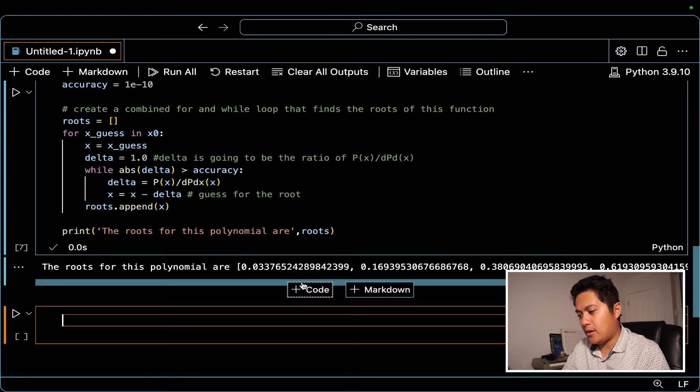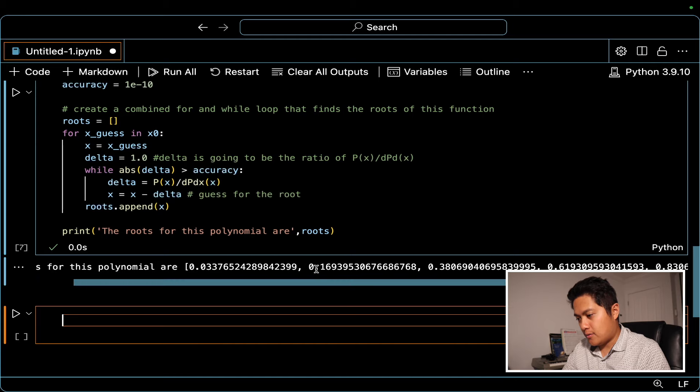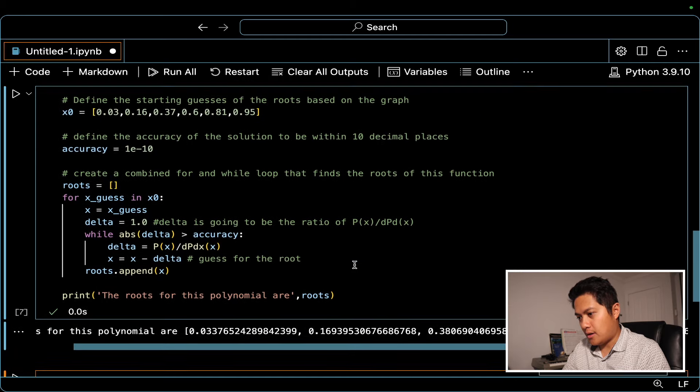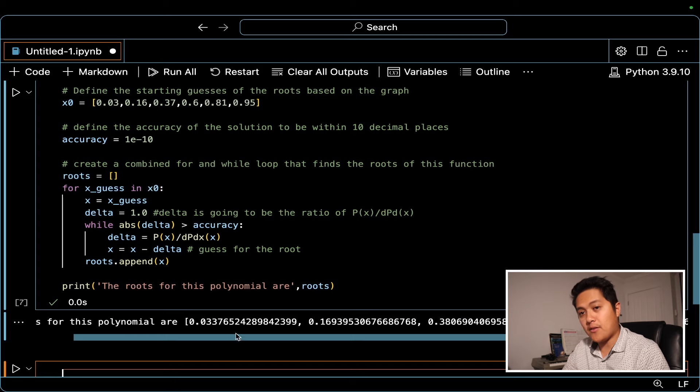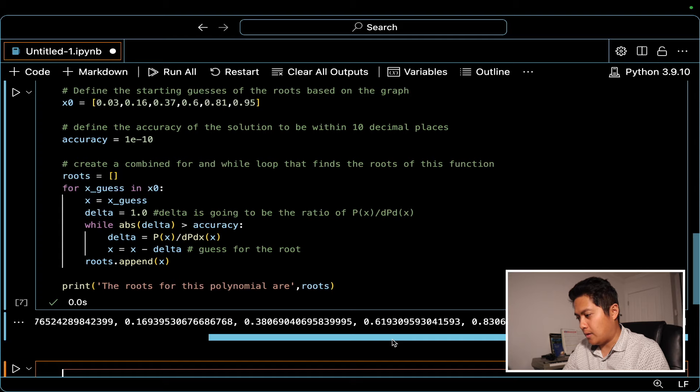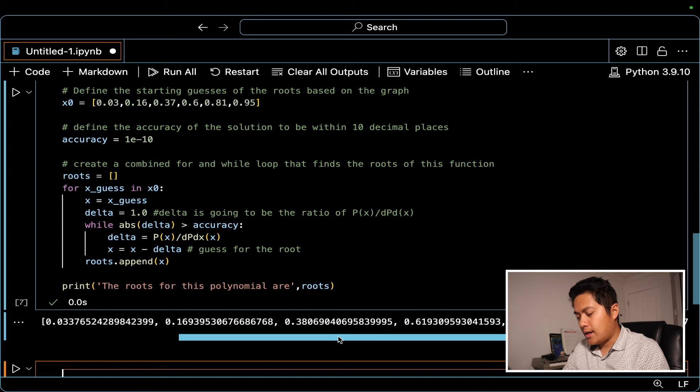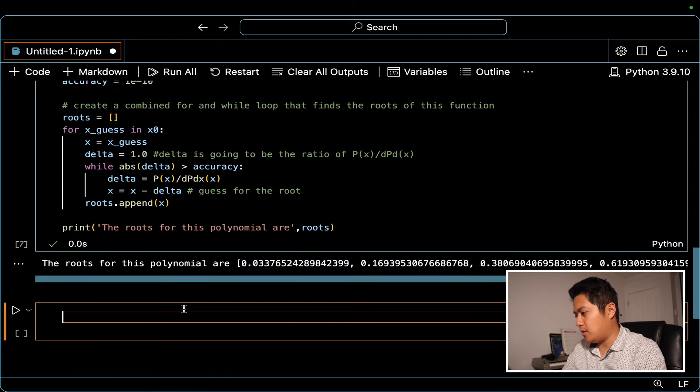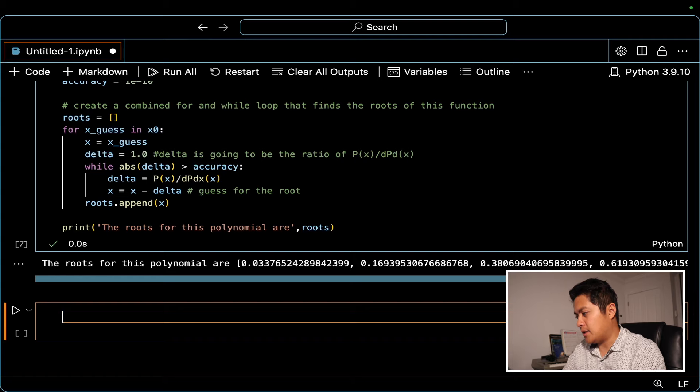All right, so we have here, the roots for this polynomial. We're not just getting the same thing we put in, you have to be careful, sometimes when you're evaluating this, sometimes you might just see that you didn't actually move anywhere in the parameter space. So let's see here. We did move a bit.